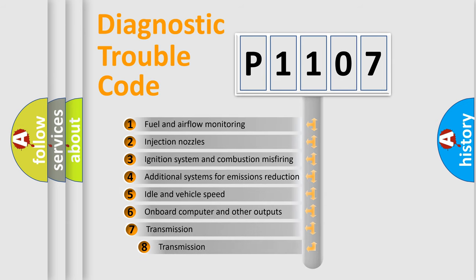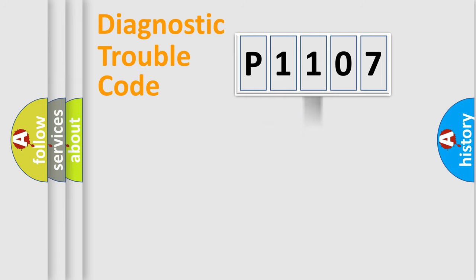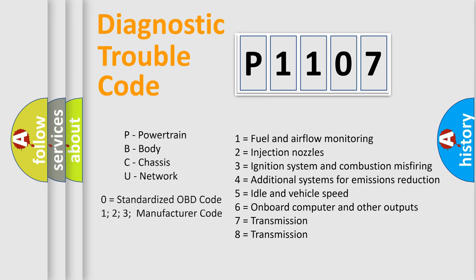The third character specifies a subset of errors. The distribution shown is valid only for the standardized DTC code. Only the last two characters define the specific fault of the group. Let's not forget that such a division is valid only if the other character code is expressed by the number zero.